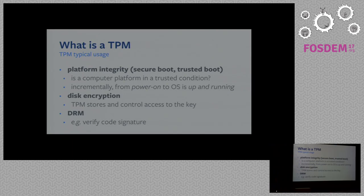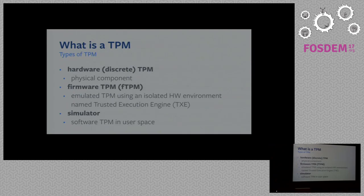Three of the main usages of TPMs: first, platform integrity — secure boot and trusted boot — which answers the question of whether a computer platform is in a trusted state. This means measuring all software run from power-on to the operating system being up and running, by creating a hash for each piece of software and storing it in TPM registers. Another typical usage is disk encryption: the TPM doesn't perform the encryption but stores the key and controls access to it. DRM is another usage.